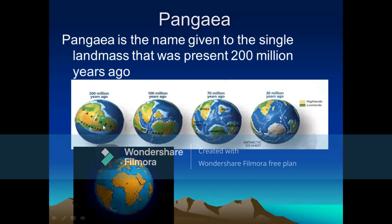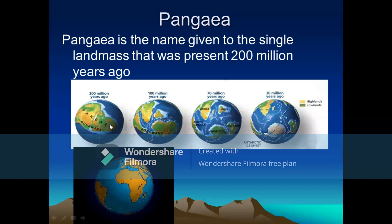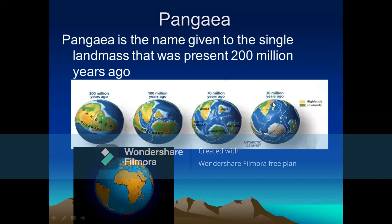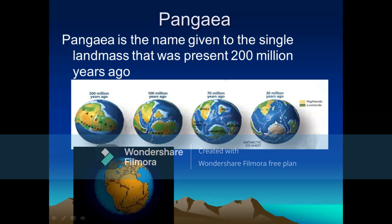This Pangaea started breaking up slowly. Around 100 million years ago, the breakup had begun. Pangaea was made up of two major parts: the upper part was called Laurasia and the lower part Gondwana Land. Around 70 million years ago, they had more shifted their locations. By around 30 million years ago, the continents had all drifted apart. According to Wegener, this supercontinent Pangaea broke up into various separate continents through the theory of continental drift.